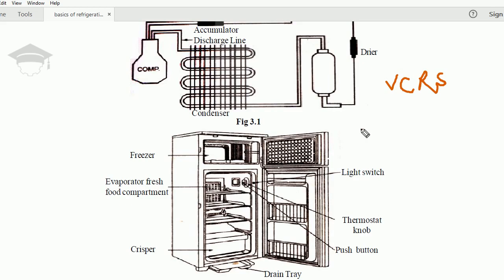Now the general domestic refrigerator that we are using at our homes looks like this. The volume can be less or more depending on capacity—we have 200 liter refrigerators or 338 liters and more. The size of the freezer can vary, but the overall working remains the same.